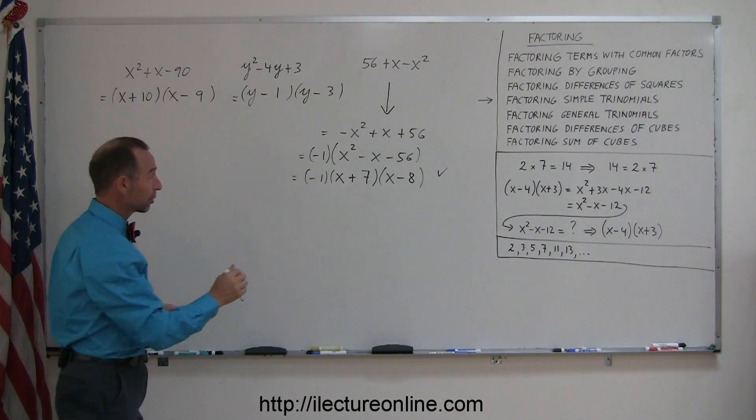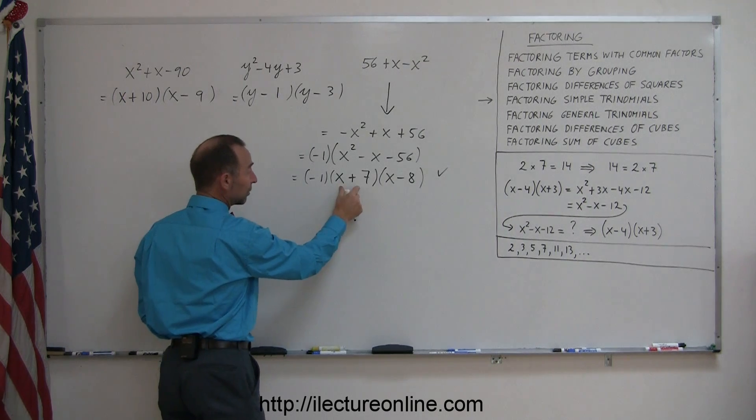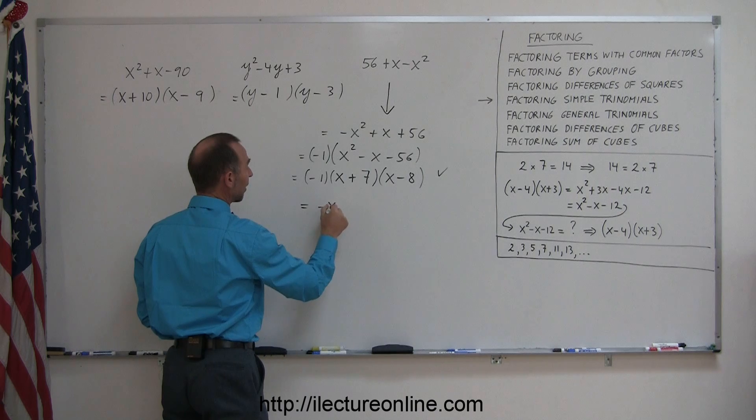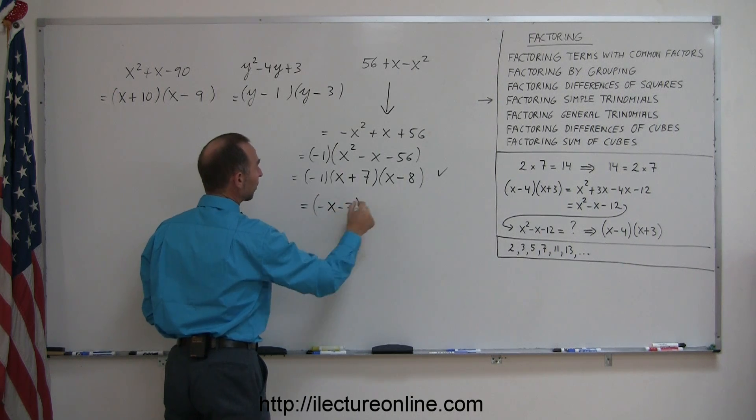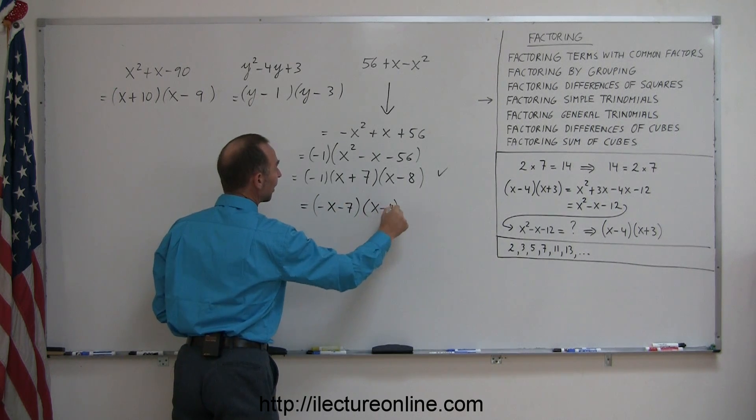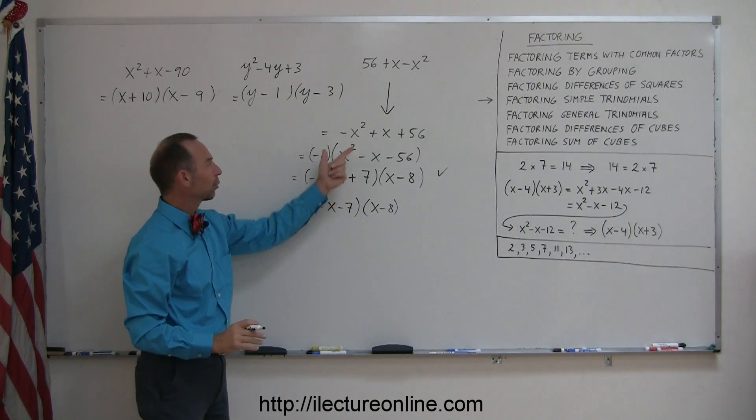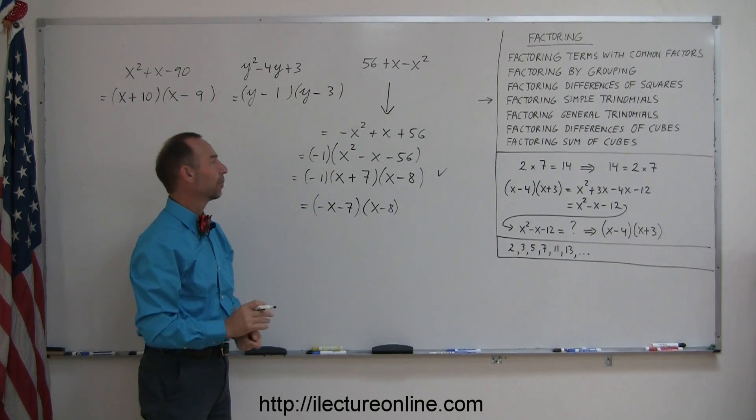Now what you could do is you can multiply this negative 1 back into either here or here. So when we do that, we could write it as a negative x minus 7 multiplied times an x minus 8, and so at least that way you get rid of the negative 1, and that keeps you from having to work with the difficulty of having a negative number there.